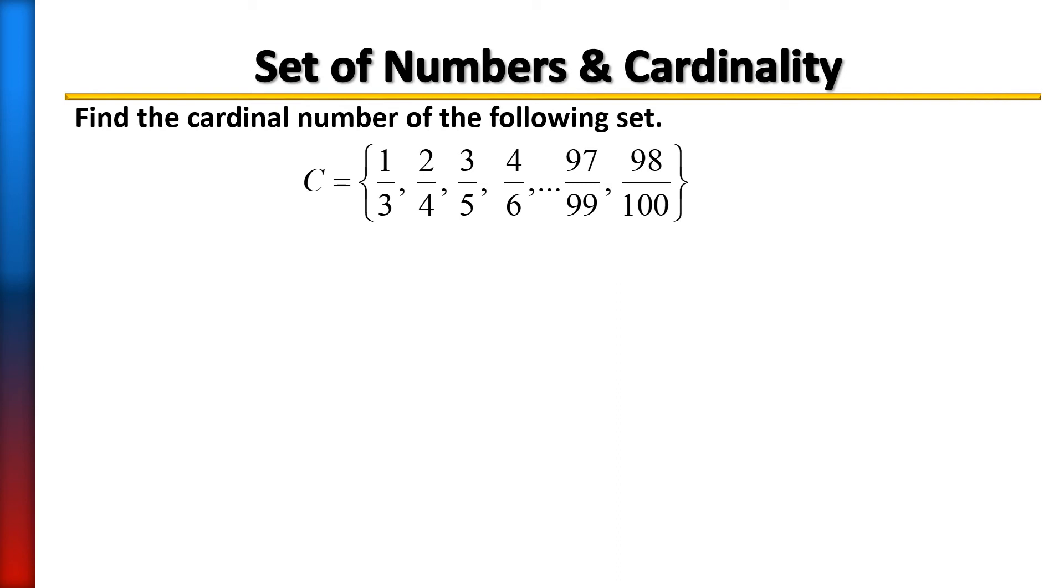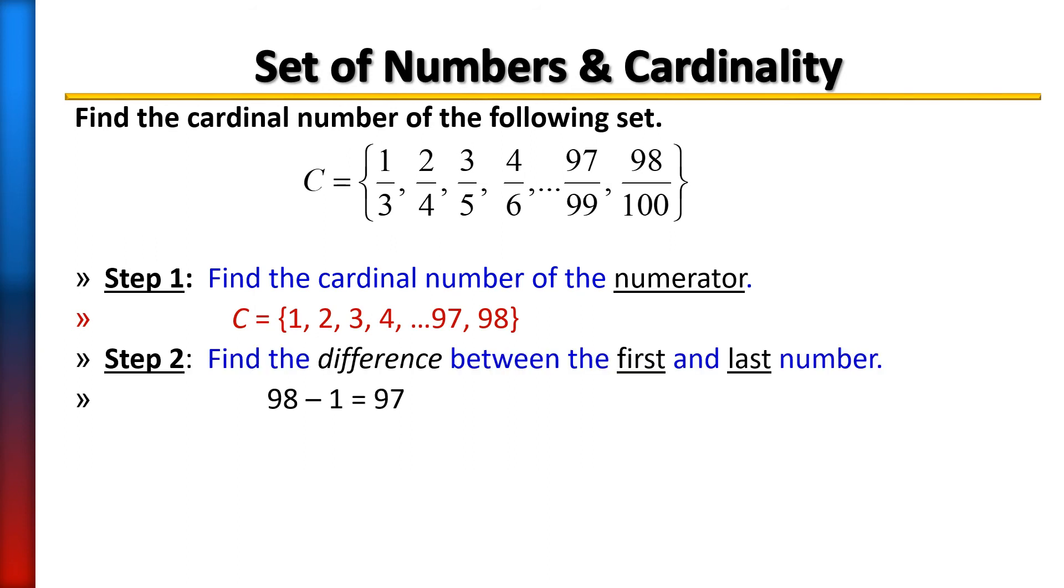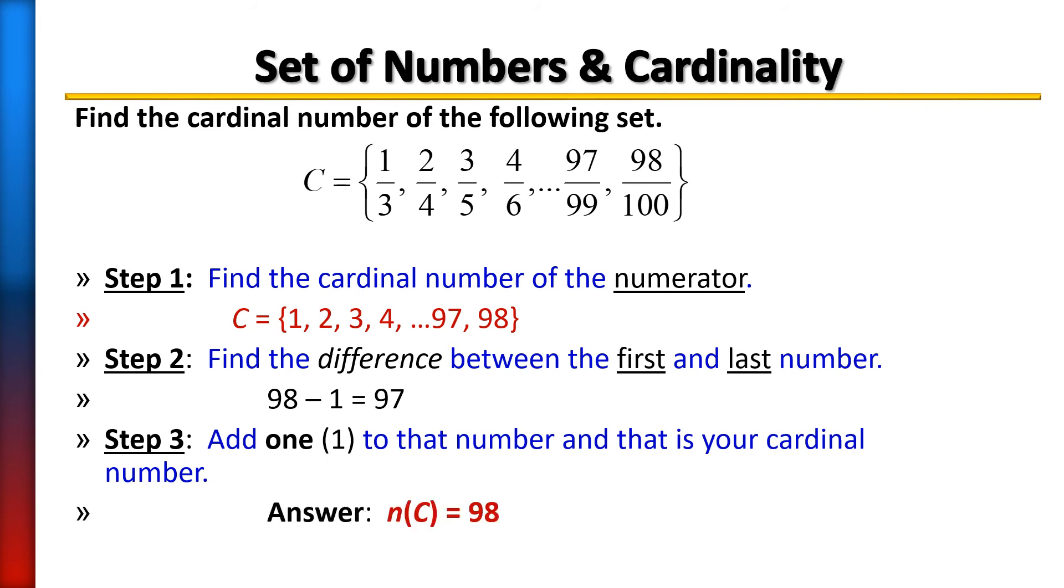So you're going to do the same as you've always done. Take the first, take the last number and subtract the two. So the first number is one, the last number is 98. That's going to give me 97. Next, because they are consecutive, it includes all the numbers. I'm not missing any, so I don't need to divide by two. Our last step is just to add one to that. And when we add one, set C has 98 members. So we would say n(C) equals 98.